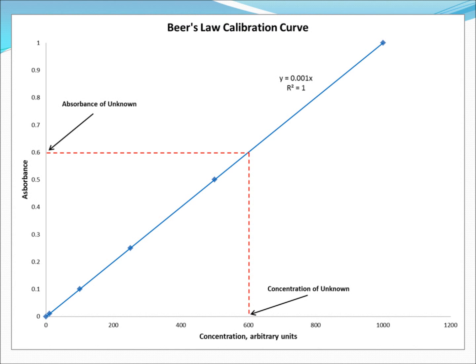Beer's Law is successful because one can make up several calibration standards containing the analyte of interest at known concentrations and subsequently measure the absorbance of each calibration standard at a given wavelength. These data are then plotted on an absorbance versus concentration plot. From this plot, a linear least squares analysis will give the equation for the calibration line. In this example, that line has an equation of y = 0.001x. One can then take a solution containing the analyte of interest at an unknown concentration, measure its absorbance, and determine the concentration from the calibration curve, as shown by the dashed red lines.